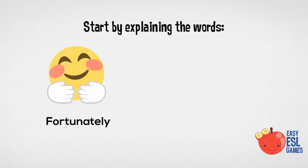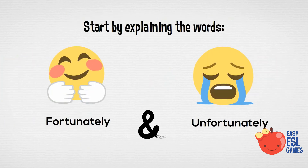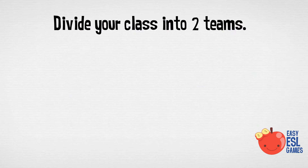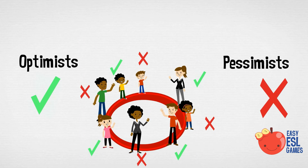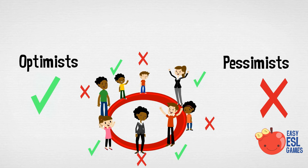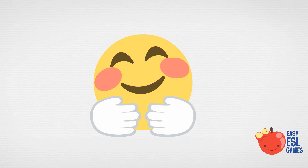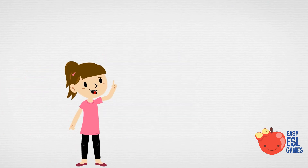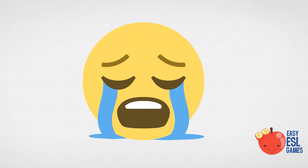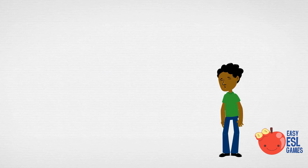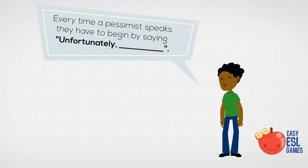Pre-teach the words 'fortunately' and 'unfortunately.' Divide your class into two teams: the optimists and the pessimists. Tell your team of optimists that it's their duty to always look on the bright side of things — they must begin every sentence with the word 'fortunately.' The other team are the pessimists; they must always see the negative side of every situation and start every sentence with the word 'unfortunately.'